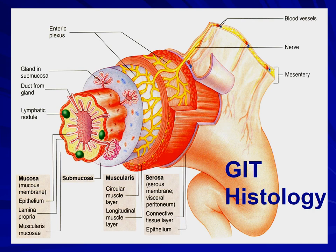Different parts of the gastrointestinal tract are specialized for carrying out different functions, particularly with reference to digestion and absorption. But the basic structural characteristic of the wall as a whole is almost similar.